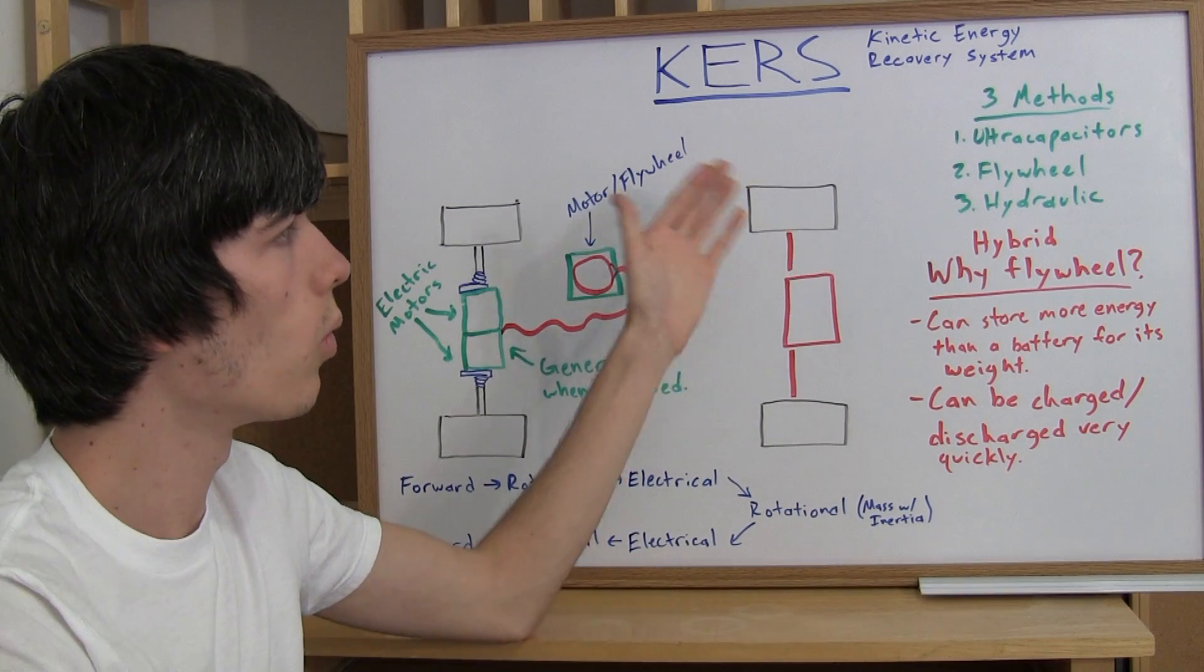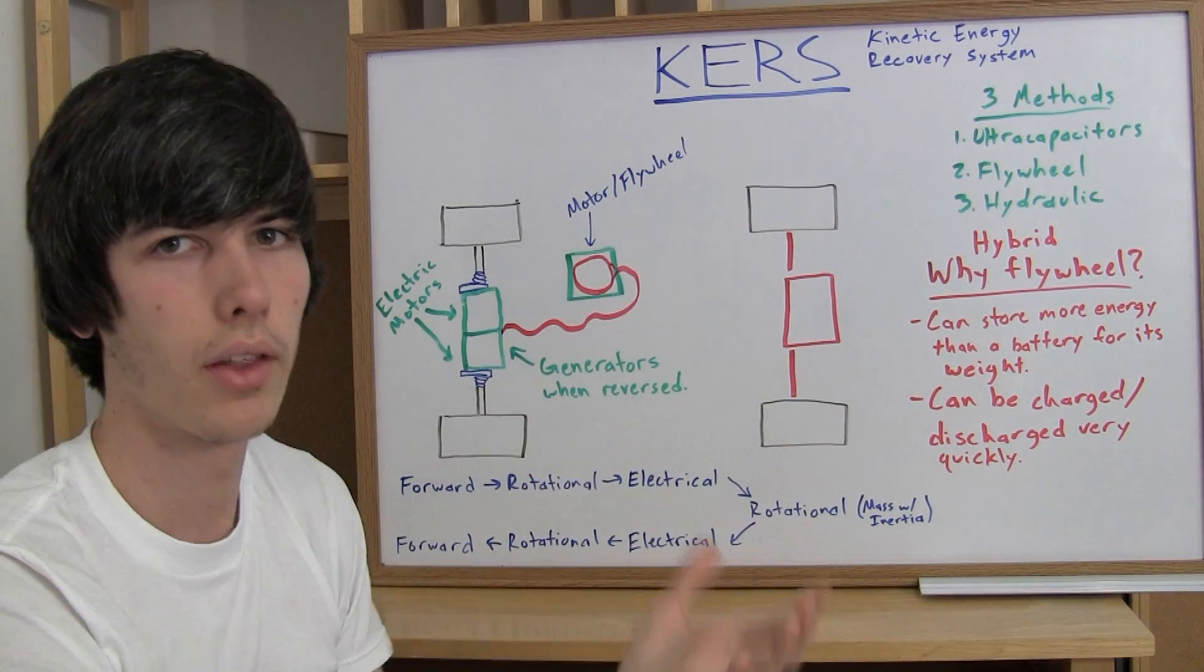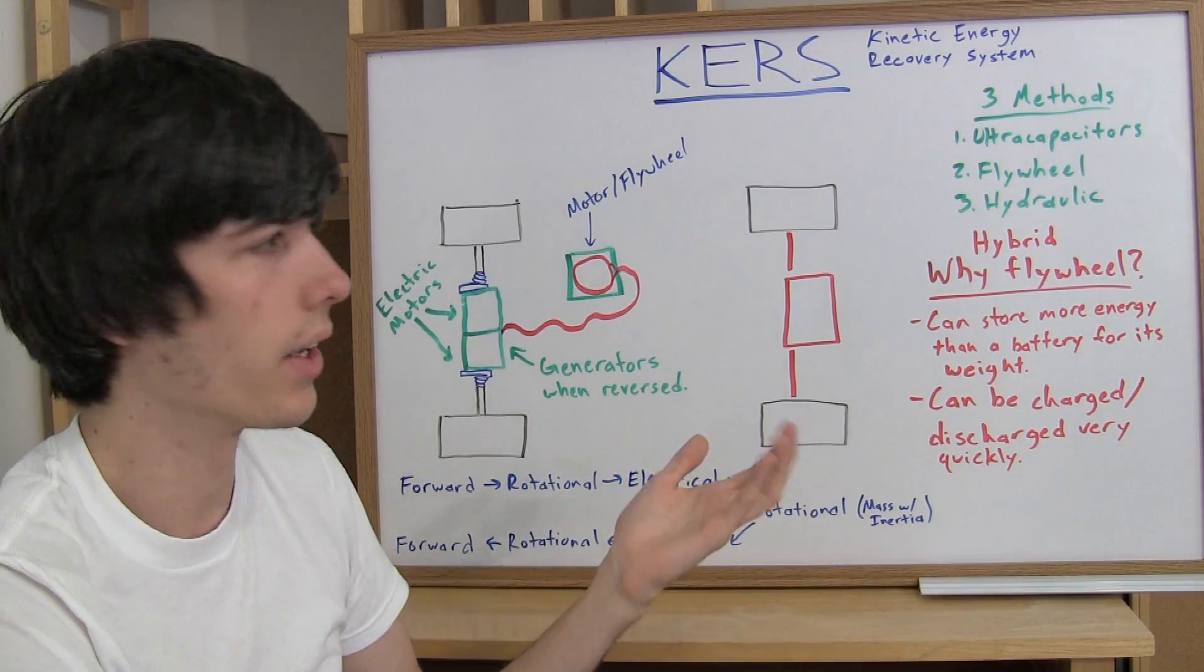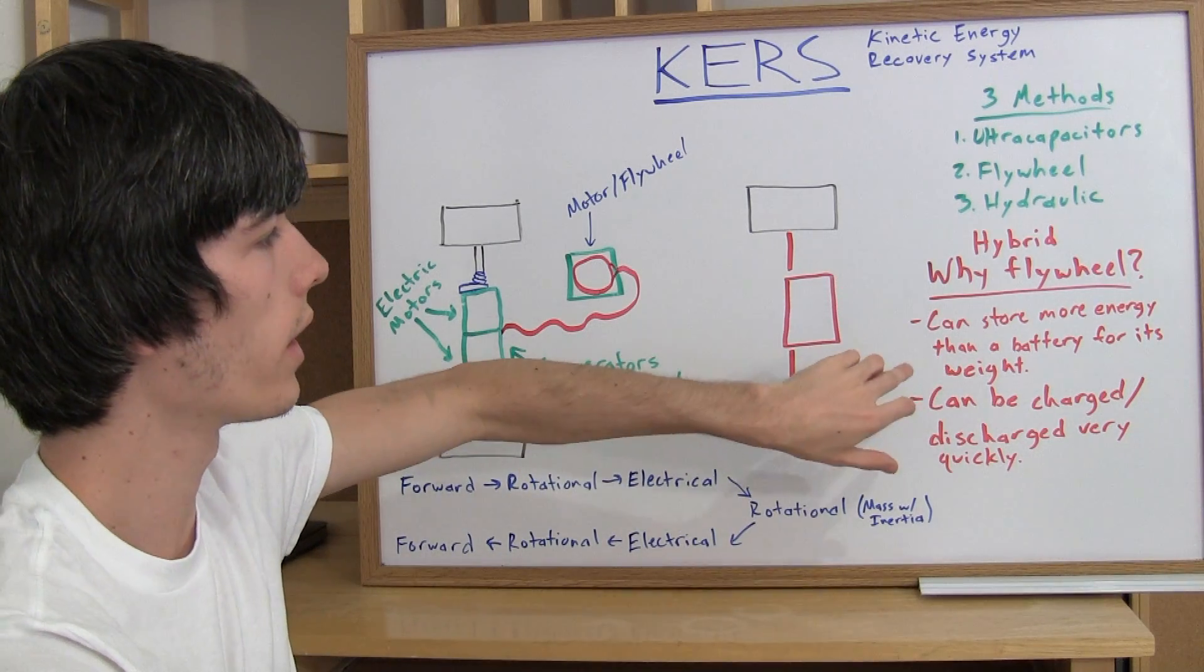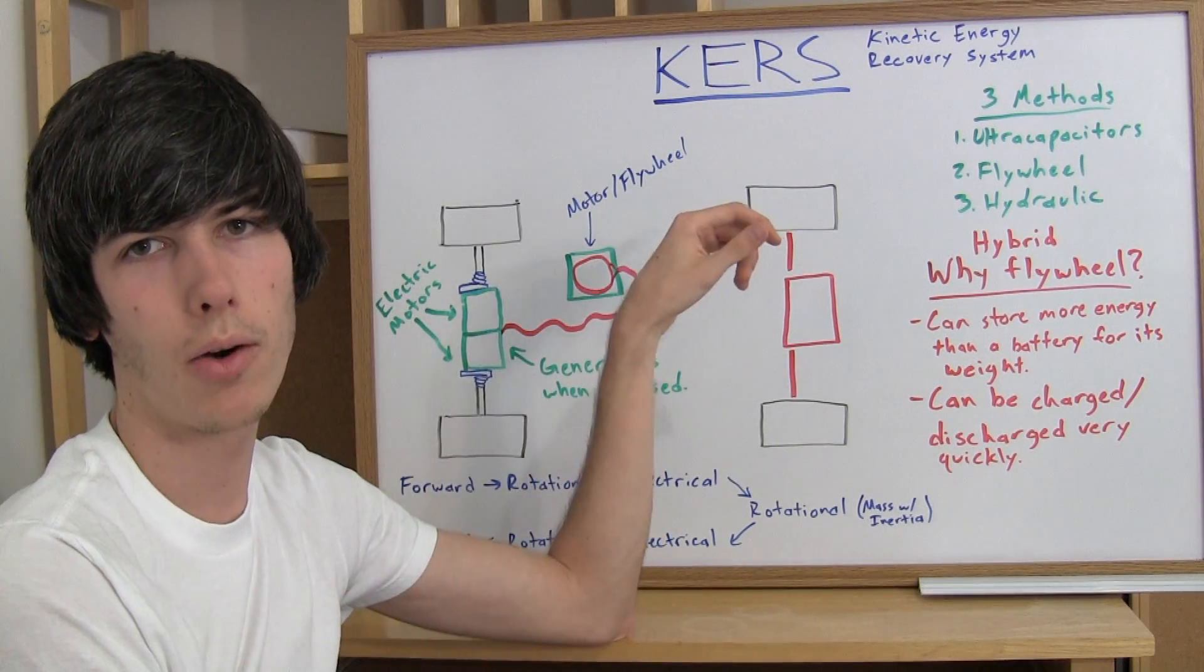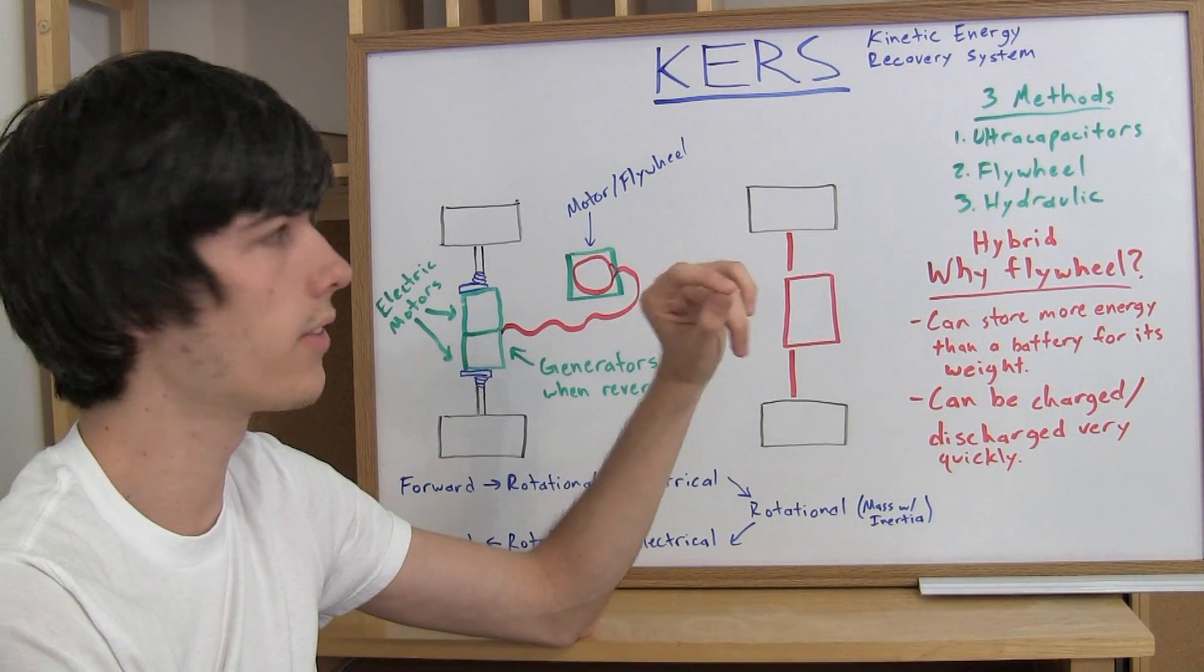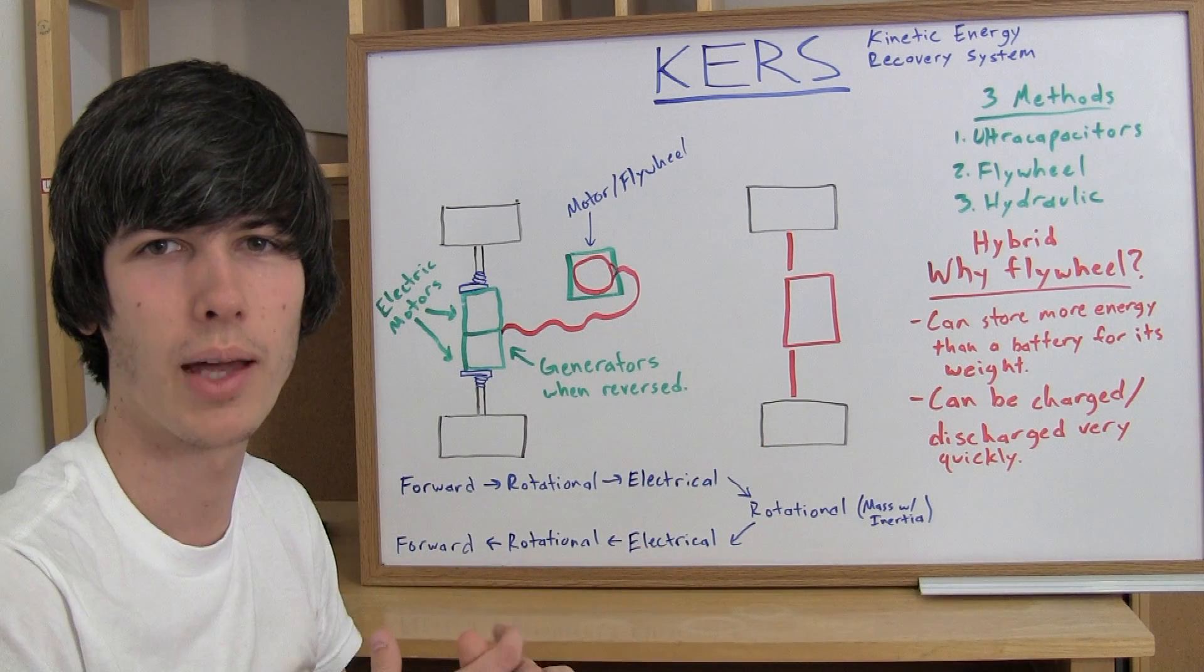Now you might be wondering, why would Porsche choose a flywheel approach to a hybrid rather than, say, a conventional battery method, such as used in a Prius? Well, the thing about a flywheel is it can store more energy than a battery for its weight. This flywheel here is only 31 pounds, yet it can give the car 160 horsepower for about 6 to 8 seconds. That's pretty impressive that 31 pounds can produce that much power.